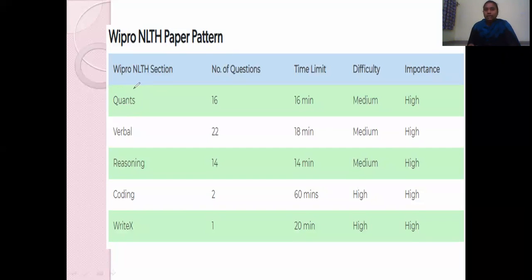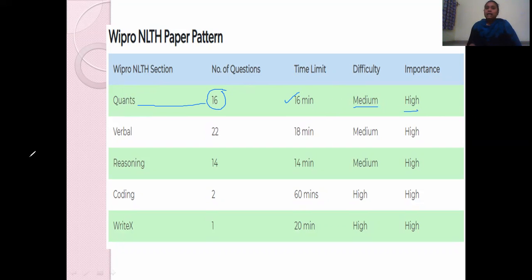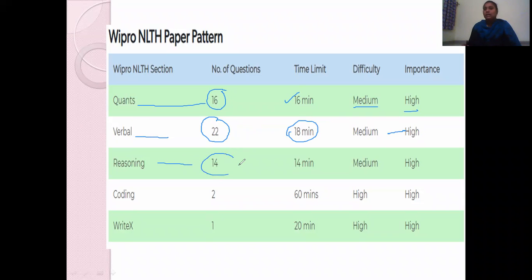Regarding the number of questions: Quantitative questions — 16 questions, with an average time of 16 minutes, difficulty ranging from medium to high. Verbal questions — 22 questions, average time 18 minutes, medium to high difficulty. Reasoning — 14 questions, average time 14 minutes, medium to high difficulty.